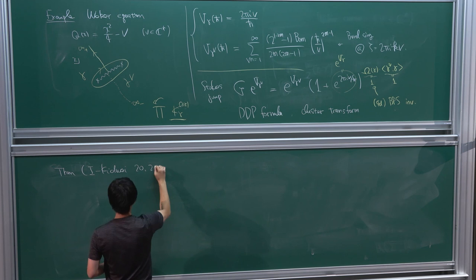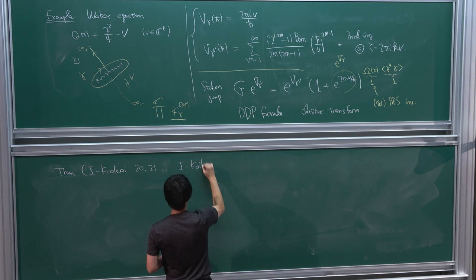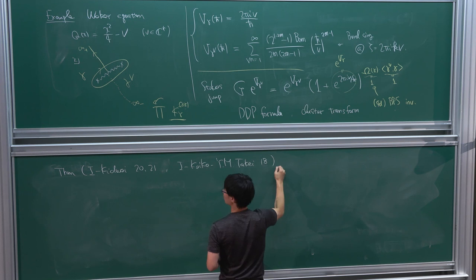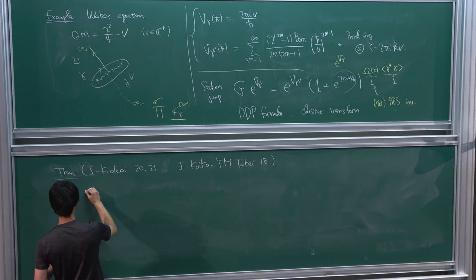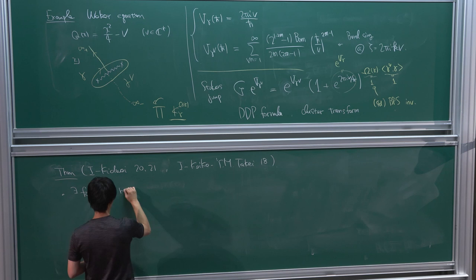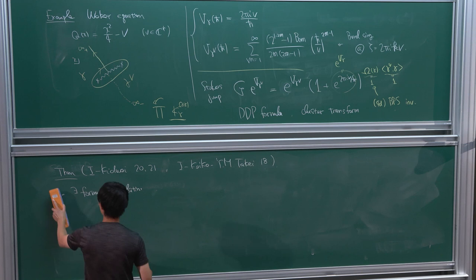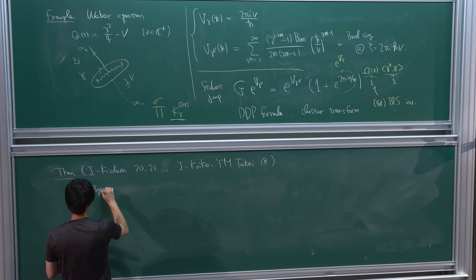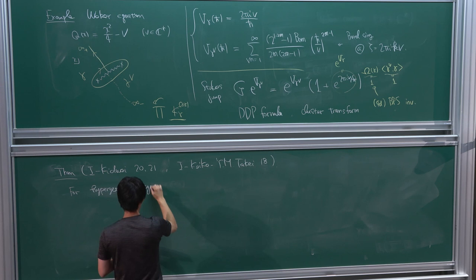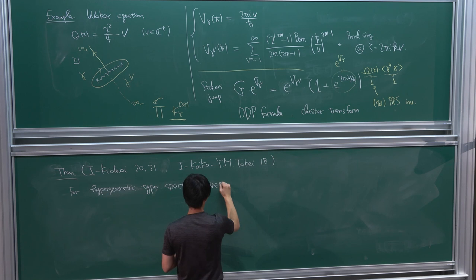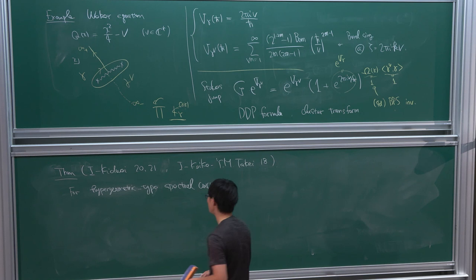This work is with Osuga-Wai and also with myself, Satoshi Koike, and Yumiko Takei. First of all, without writing the explicit form, there is a formula for hypergeometric-type spectral curves — obtained as the classical limit of hypergeometric ordinary differential equations — relating the Bohr's coefficients and topological recursion free energies.